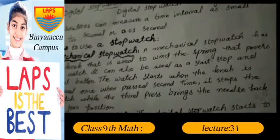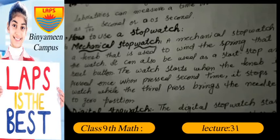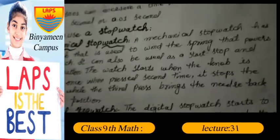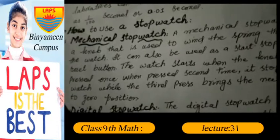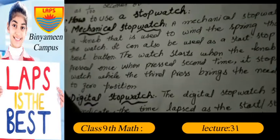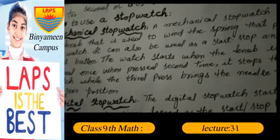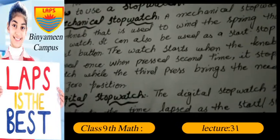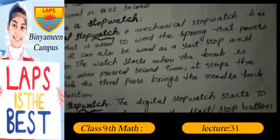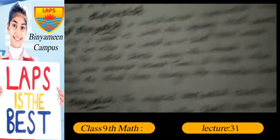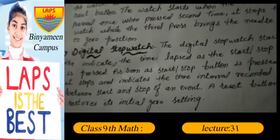How to use the stopwatch: A mechanical stopwatch has a knob that is used to wind the spring that powers the watch. It can also be used as a start, stop, and reset button. The watch starts when the knob is pressed once. When pressed a second time, it stops the watch, while the third press brings the needles back to zero position.